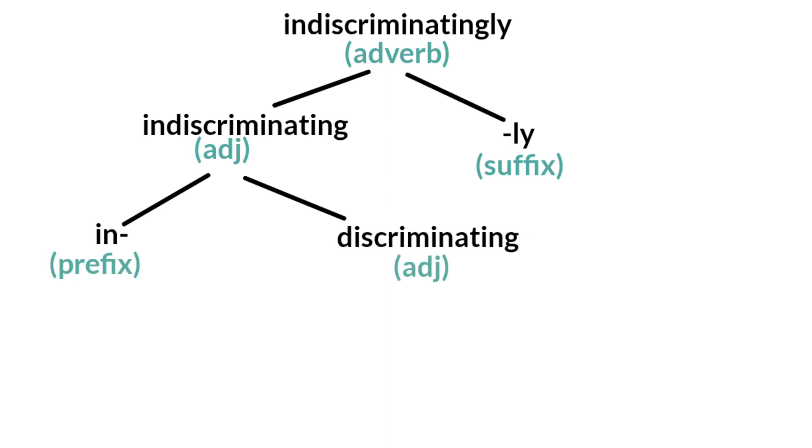Now to continue the process, we will divide the word discriminating to get the root word discriminate and the affix -ing. So that's it, that's the end of the process.